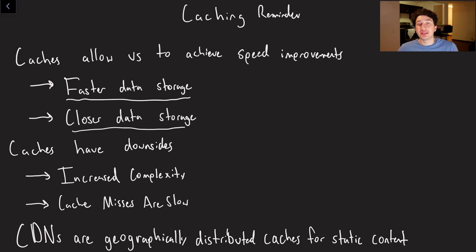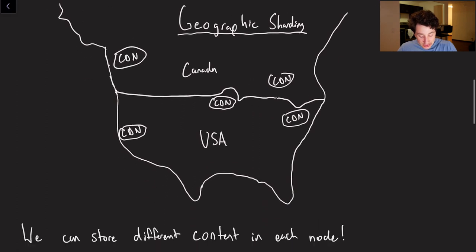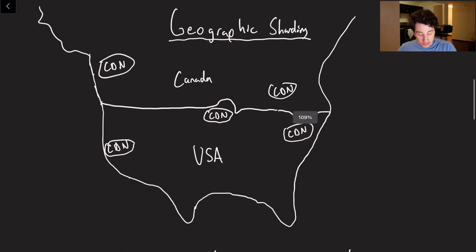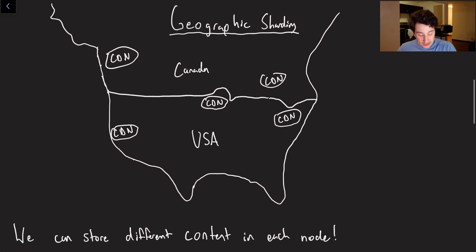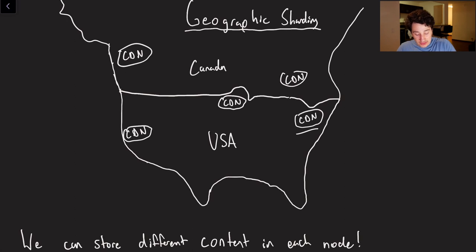The main distinguishing factor of a CDN is that it is a geographically distributed cache that is used specifically for static content. So it's basically a subset of a distributed cache. As you can see, I've got my terrible drawing of the USA and Canada — frankly, I was too lazy to look up what Canada is shaped like. The point here is that geographic sharding is going to allow us to do the following: if we have the USA over here, this is New York, San Francisco, Chicago, and then we've got Canada — maybe Toronto and Vancouver.